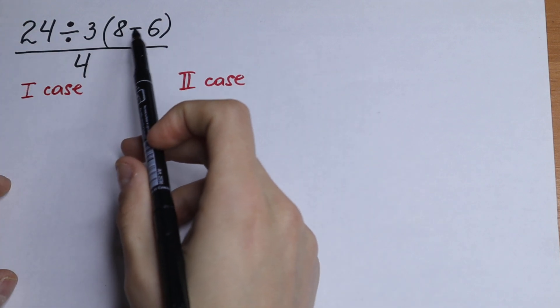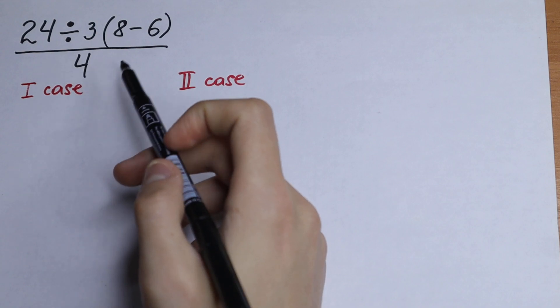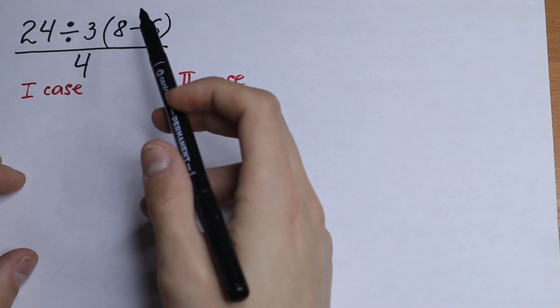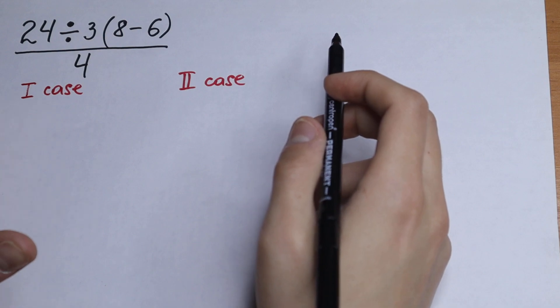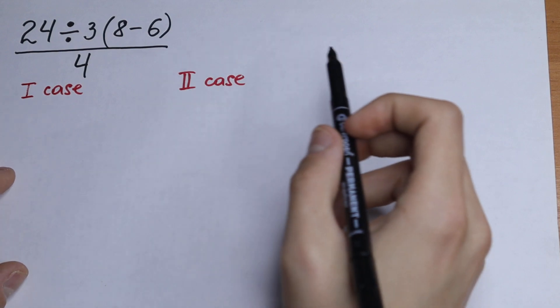24 divided by 3, 8 minus 6 in parentheses over 4. So pause the video and try to solve it. I swear it will be a really tricky thing and try to answer in a comment right now.